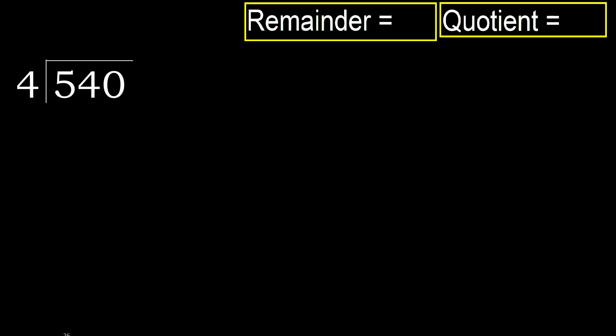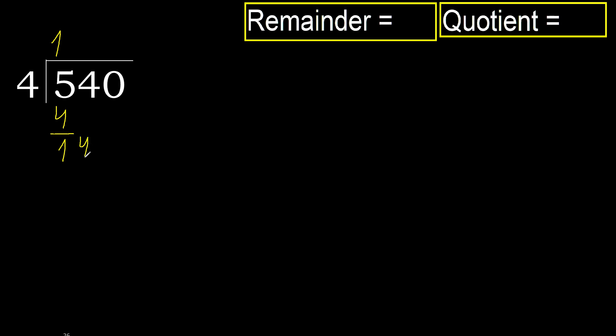540 divided by 4. 5 is not less, therefore with 5: 4 multiplied by which number is nearest to 5 but not greater? 4 multiplied by 1 is 4, not greater. 5 minus 4 is 1. Next: 14. 4 multiplied by 5 is 20, that's greater. Multiplied by 4 is 16, still greater.